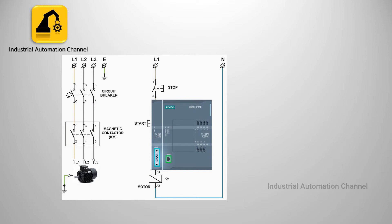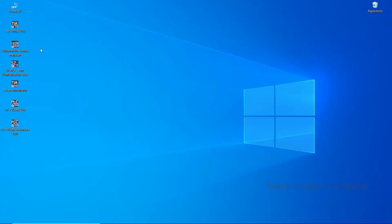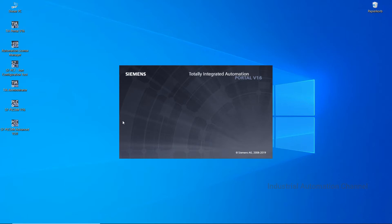In TIA Portal, a normally open push-button is shown with this symbol. If you press the button, this symbol will be green. Normally closed is represented with this symbol, and the output with this one.